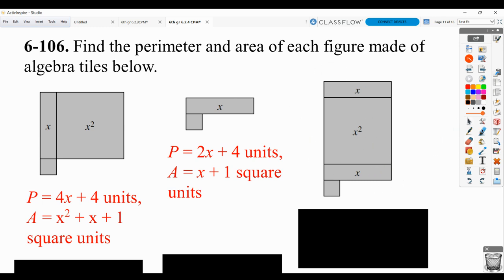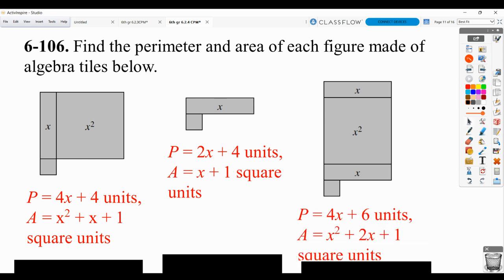For this last one, same kind of thing. Area is always the easiest, which is x to the second power from this tile plus 2x tiles plus 1.